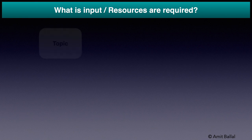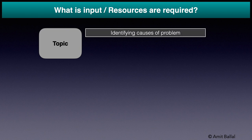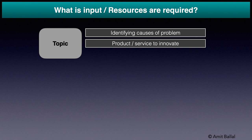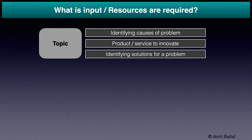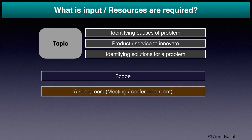Inputs needed for brainstorming are: the topic, which can be to identify the causes of a problem, to innovate a product or service, or to identify solutions to a problem. The scope should specify limitations of the brainstorming session — whether it will also include rating, prioritization of ideas, and preparation of an action plan, or will be limited only to the collection of ideas.